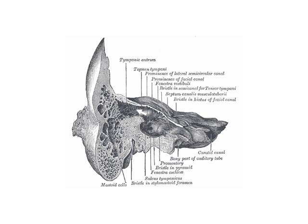The antrum and mastoid air cells are lined by mucous membrane continuous with that lining the tympanic membrane. This shows the communication of the middle ear space through the mastoid aditus to the mastoid antrum — from the epitympanum via the aditus into the antrum and thereafter the mastoid air cell system.